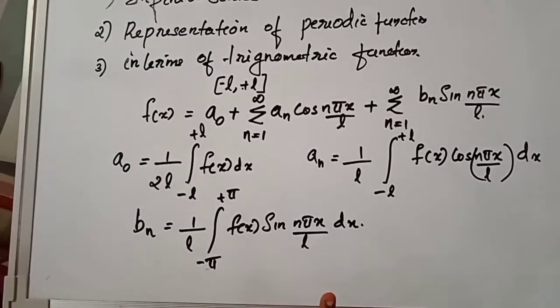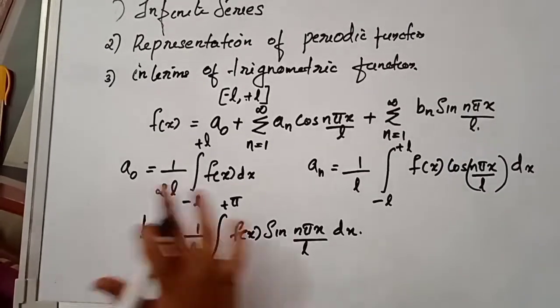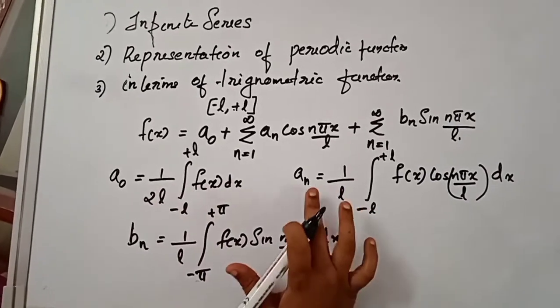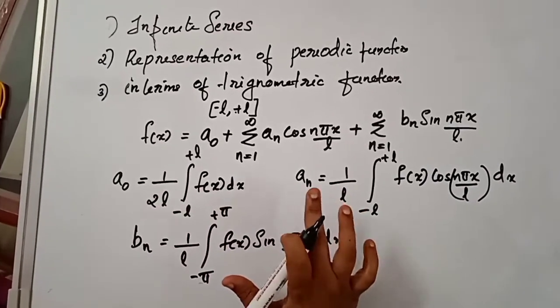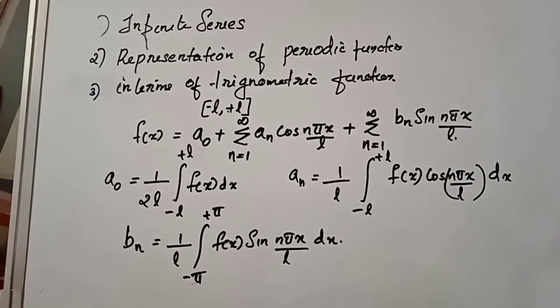Where a0, an, and bn are called Fourier constants.